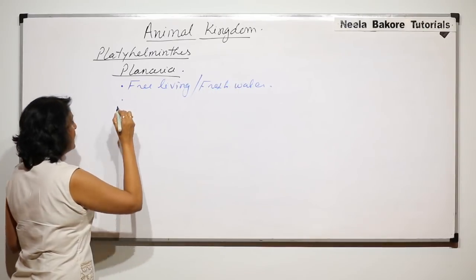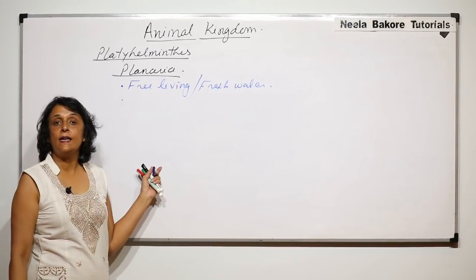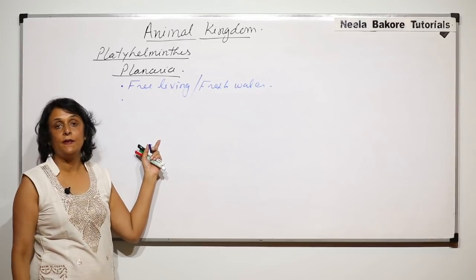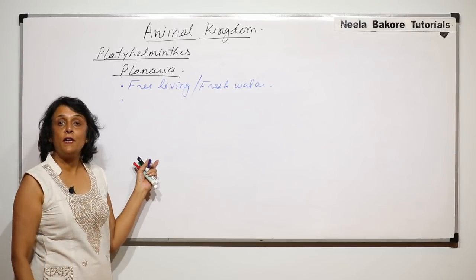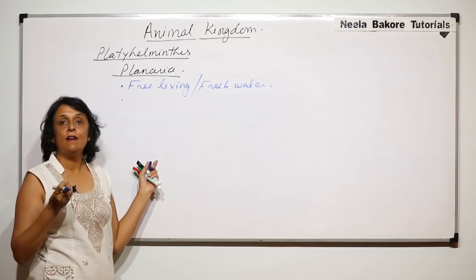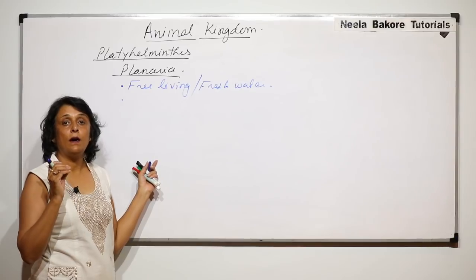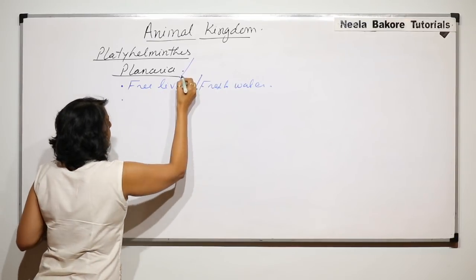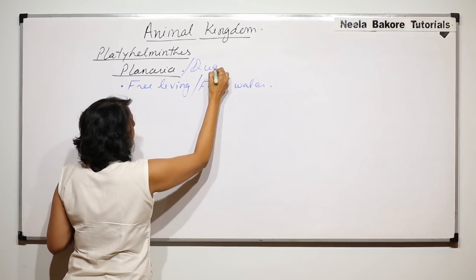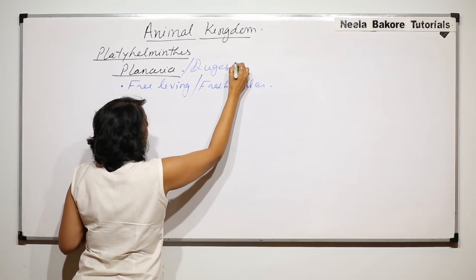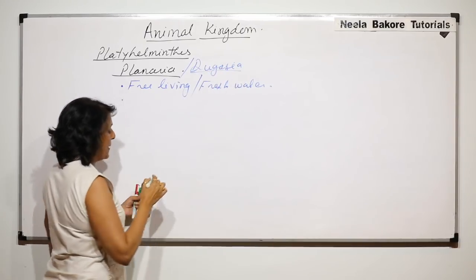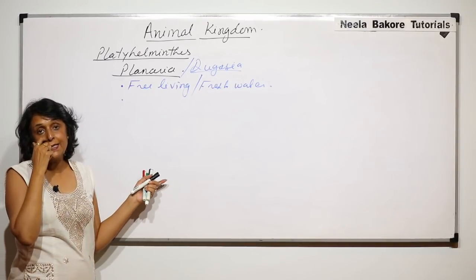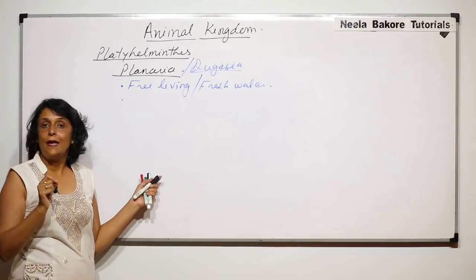General characteristics are the same as of the phylum Platyhelminthes, but because it is free-living it has developed sense organs like eyes. It is also known as Dugesia. So Dugesia or Planaria, as they are free-living, we would see sense organs like eyes.